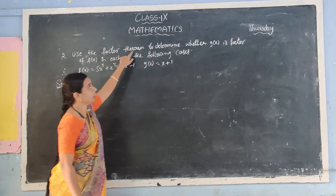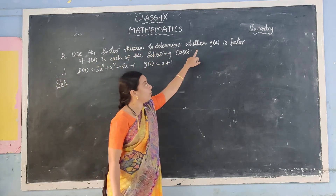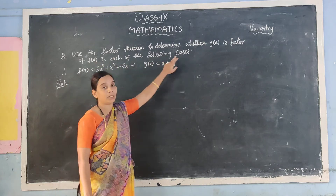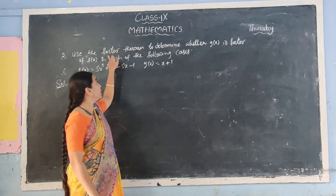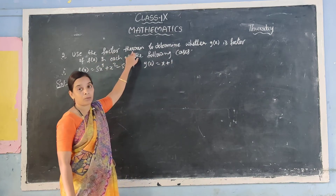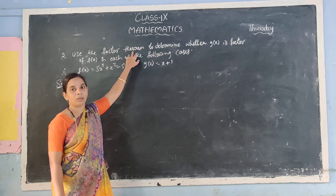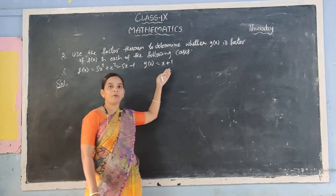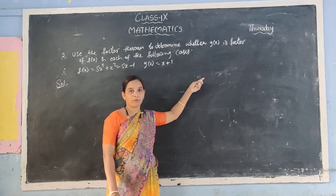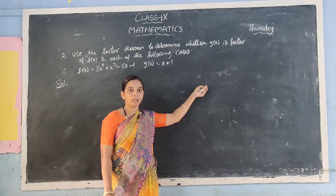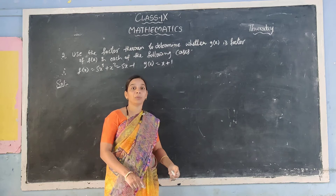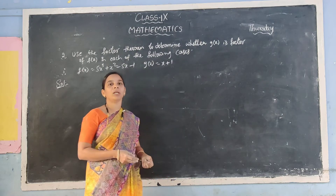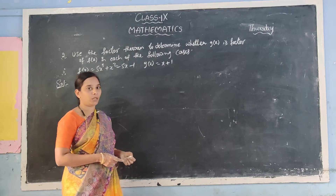Use the factor theorem to determine whether g(x) is a factor of p(x) in each of the following cases. Using the factor theorem — yesterday I explained it — if x minus a is a factor of p(x), then p(a) is equal to 0. That means the remainder is always 0. Then only you can conclude that that is the factor.